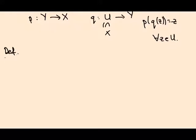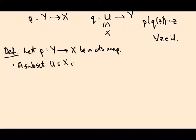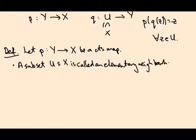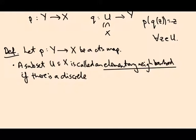Let's make a definition. Let p be a map from a space Y to a space X. First of all, a subset U in X is called an elementary neighborhood if there is a discrete set F and a homeomorphism...